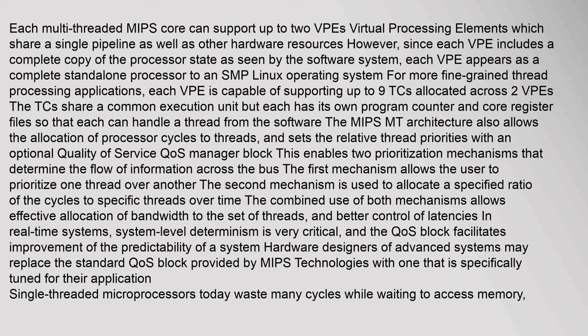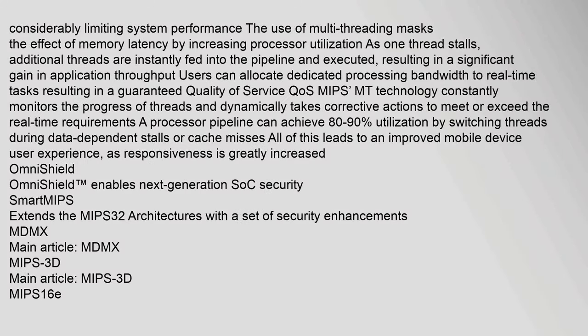The QoS block facilitates improvement of predictability in real-time systems. Hardware designers may replace the standard QoS block with one tuned for their application. Multi-threading masks the effect of memory latency by increasing processor utilization: as one thread stalls, additional threads are instantly fed into the pipeline, resulting in significant gains in application throughput. A processor pipeline can achieve 80 to 90 percent utilization by switching threads during data-dependent stalls or cache misses, improving mobile device responsiveness.